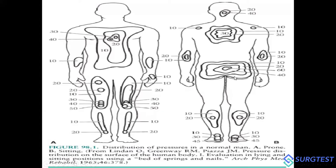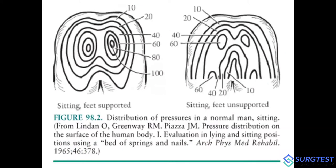In the supine position, there are three major pressure points: first is the occiput, second is the sacrum — which receives the highest pressure — and third is the heels. In a normal sitting position with feet supported, the ischium receives maximum pressure; with feet unsupported, pressure shifts over the ischium and the femoral region.